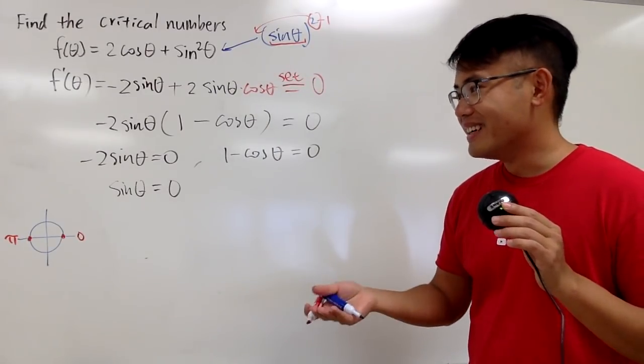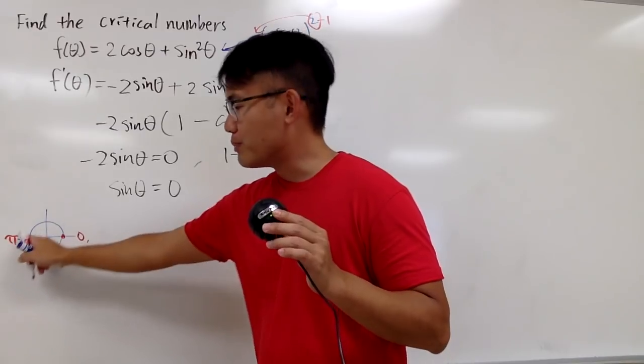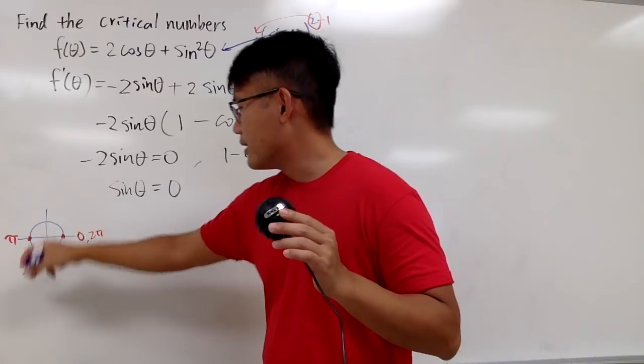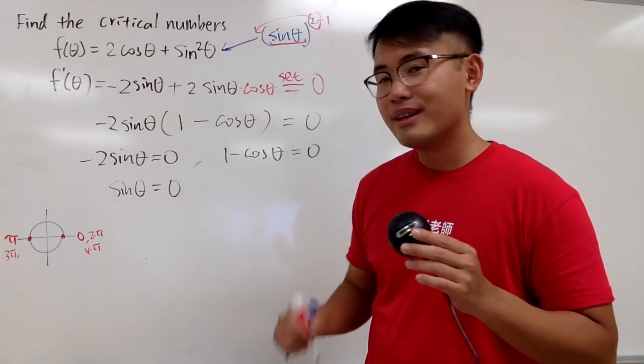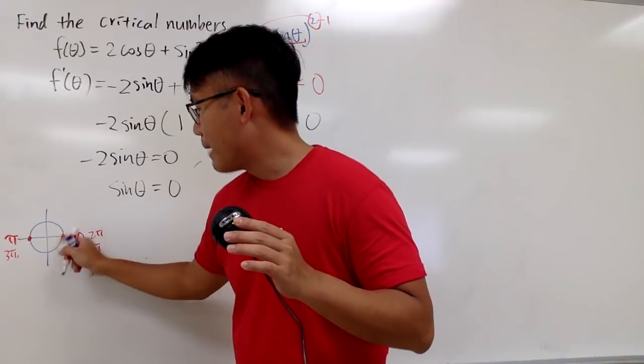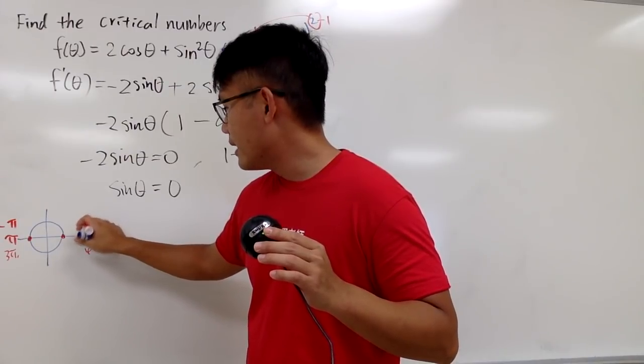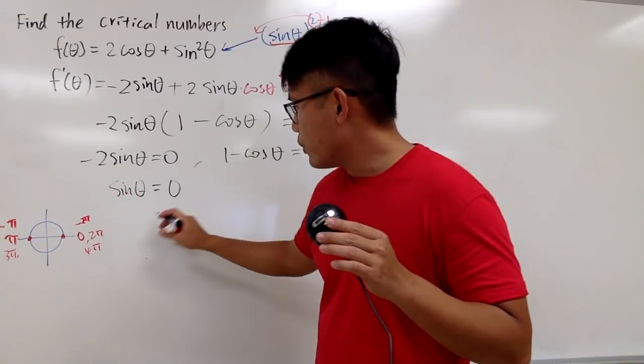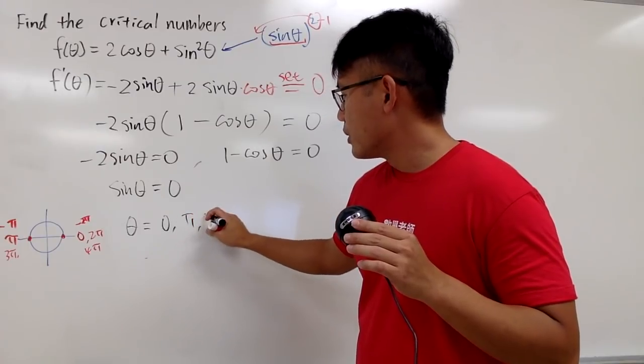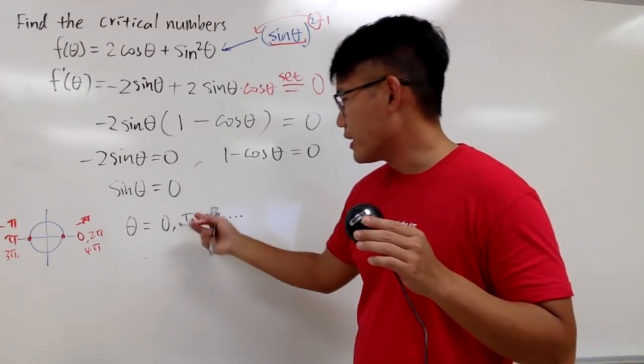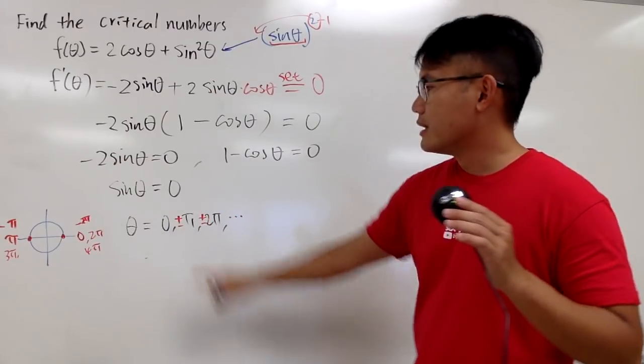But since this question didn't specify the domain, we'll just solve for all of the critical numbers. So we'll find all the solutions to this. In other words, you just keep going. From 0 to π, and then you add another π, which is going to be 2π. And then 3π, and then 4π, and then 5π, 6π, and so on. And don't forget, we can also do backwards from 0. Go back, which is negative π, and negative 2π, and so on. Anyway, the point is, from this equation, we are saying theta is equal to 0, π, 2π, 3π, 4π, and so on. And each of them can be plus minus. And for the 0, you don't have to put plus minus, because plus minus 0 is just 0 anyway. So that was for this equation.